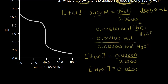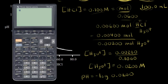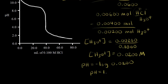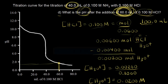So [H₃O⁺] = 0.002 / 0.1 = 0.0200 molar. Now we find the pH: pH = −log(0.0200) = 1.699, or approximately 1.70. After adding 60 milliliters of acid, our pH is about 1.7. On the titration curve, we are now past the equivalence point, and the pH has dropped significantly to around 1.7.